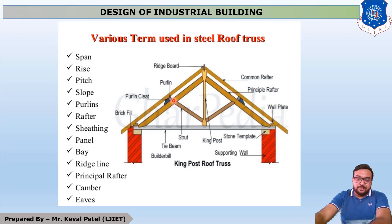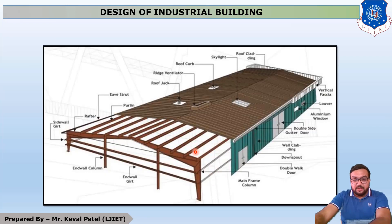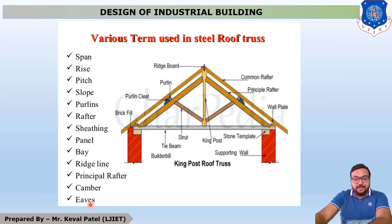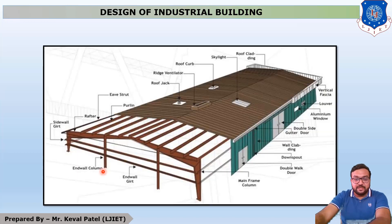Next is Purlin — it is the supporting member of the roof material. Next is Rafter — the inclined member is called Rafter or Principal Rafter. Next is Panel — the center-to-center distance between two columns is called a Panel, also denoted as B. Next is Ridge Line — the topmost portion of the roof is called the Ridge Line. Principal Rafter is as already discussed.